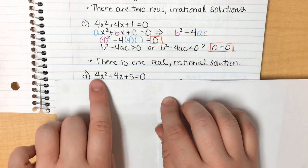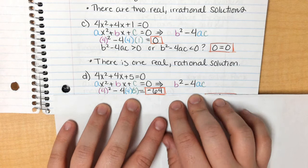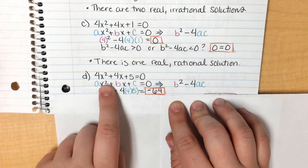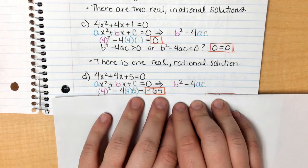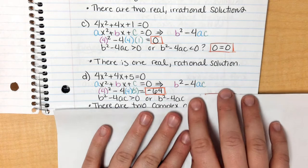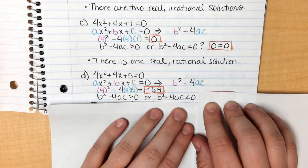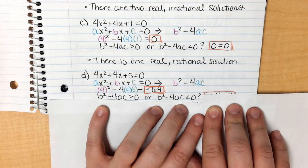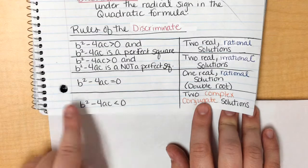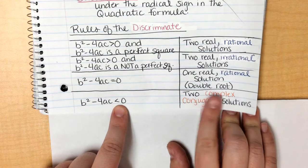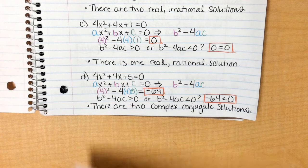Alright, this one right here. Again, 4, 4, and positive 5. We're going to plug him in. And when I plug him in this time, I'm going to get 4 squared minus 4 times 4 times 5. When I type that into my calculator, it gives me negative 64. So is that guy greater than 0 or is he smaller than 0? Negative 64 is definitely smaller than 0. Well, going back to here, there is only one guy that's allowed to be smaller than 0. So my answers are going to end up being two complex conjugate solutions, which looks like that.